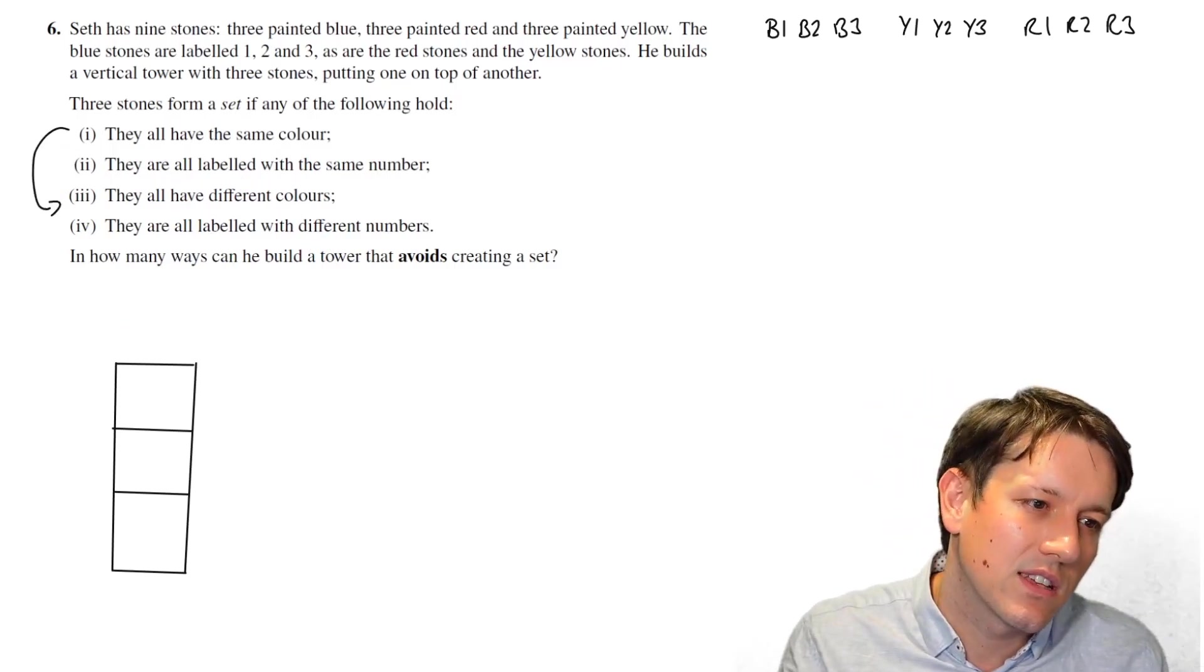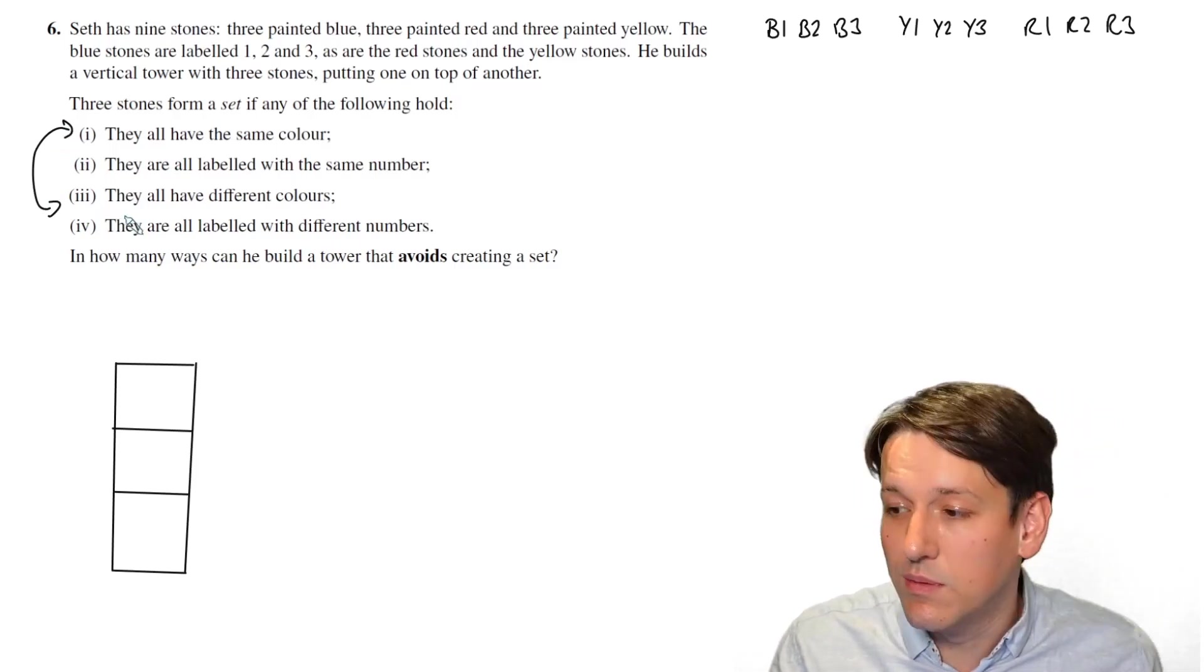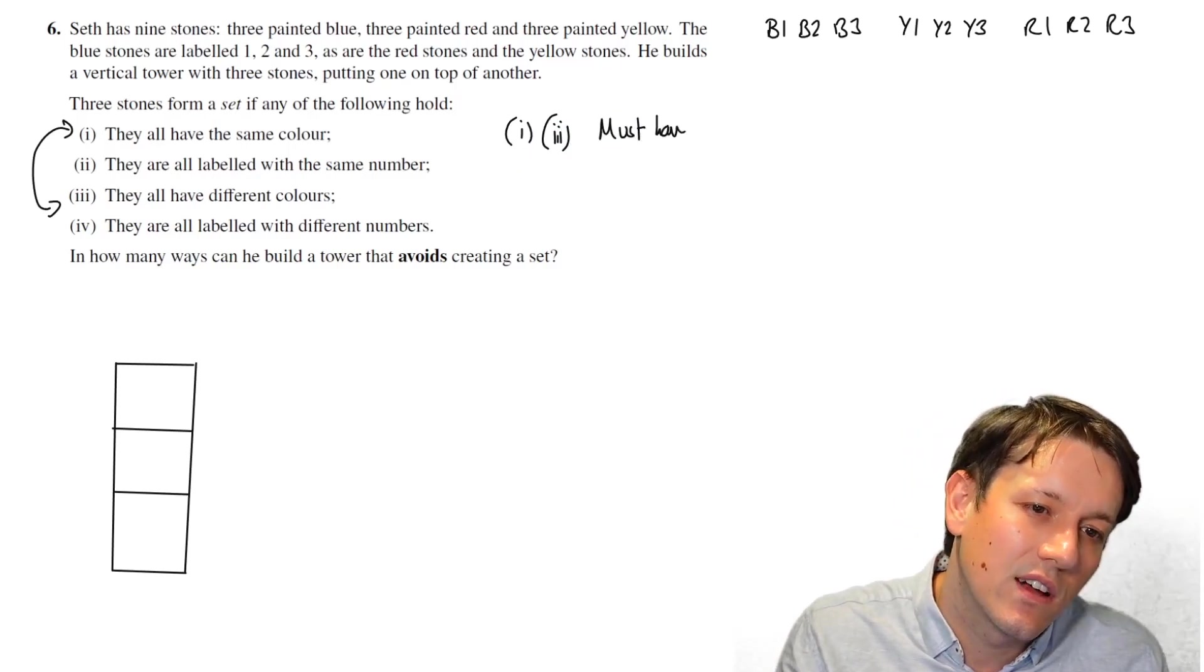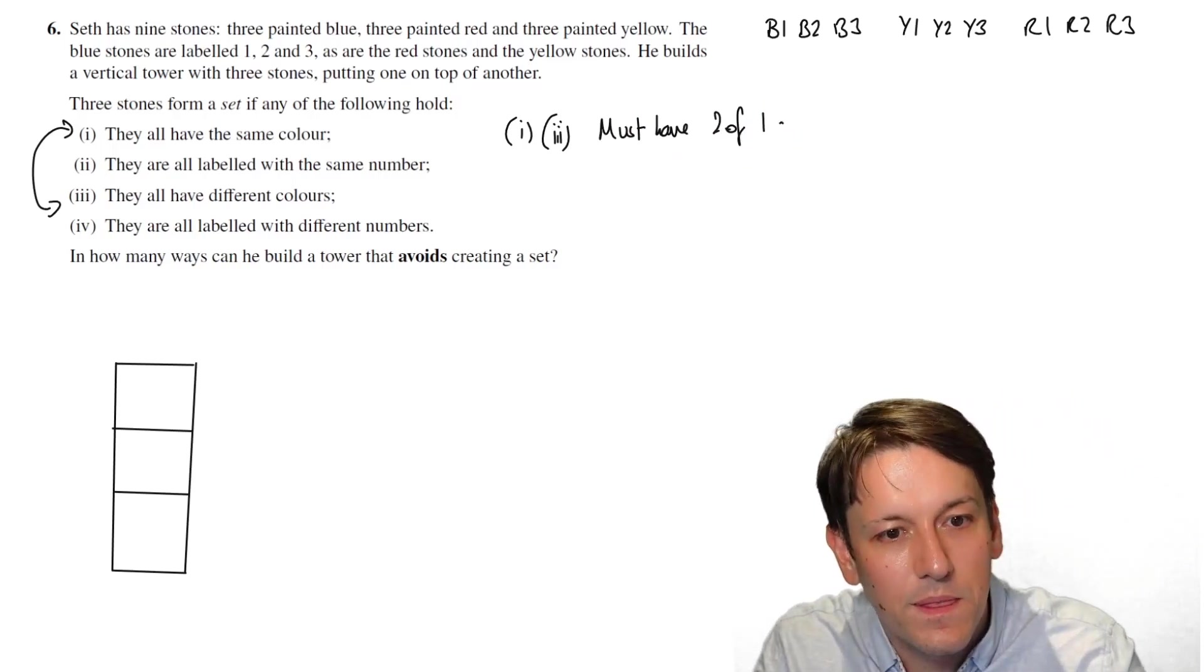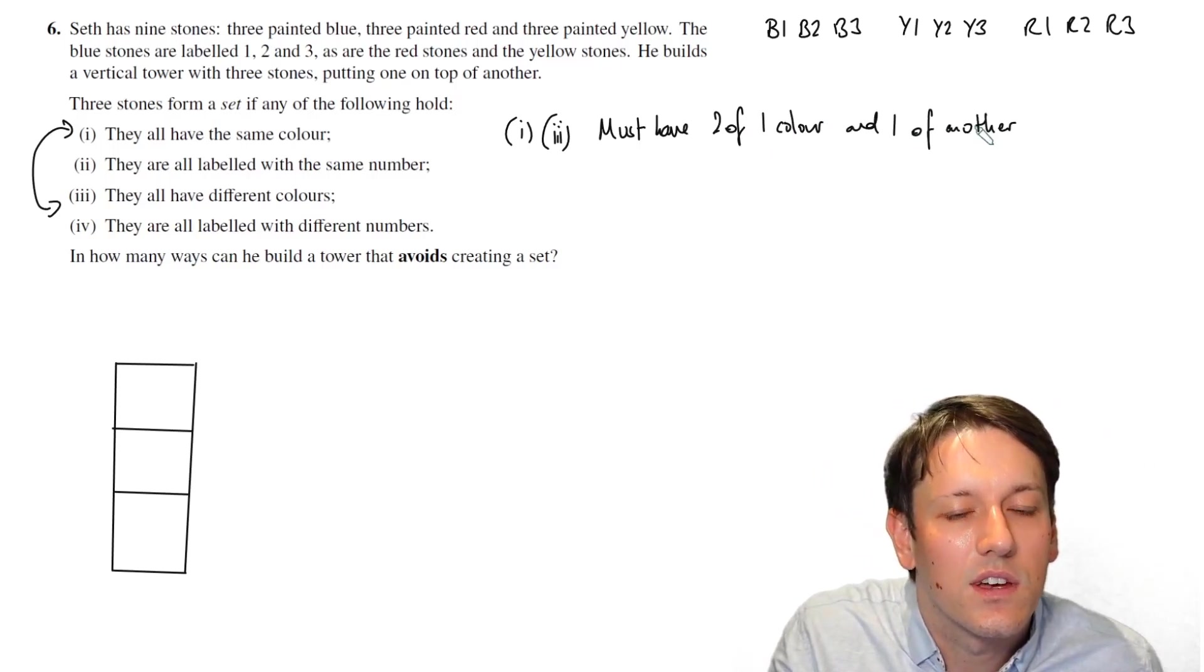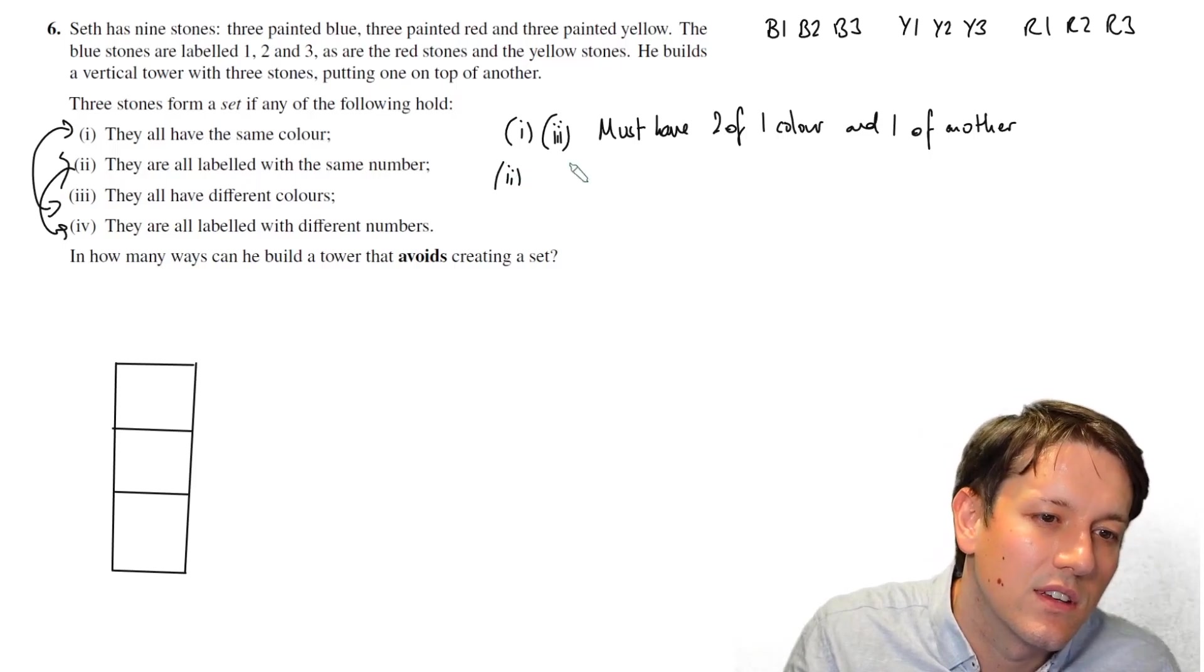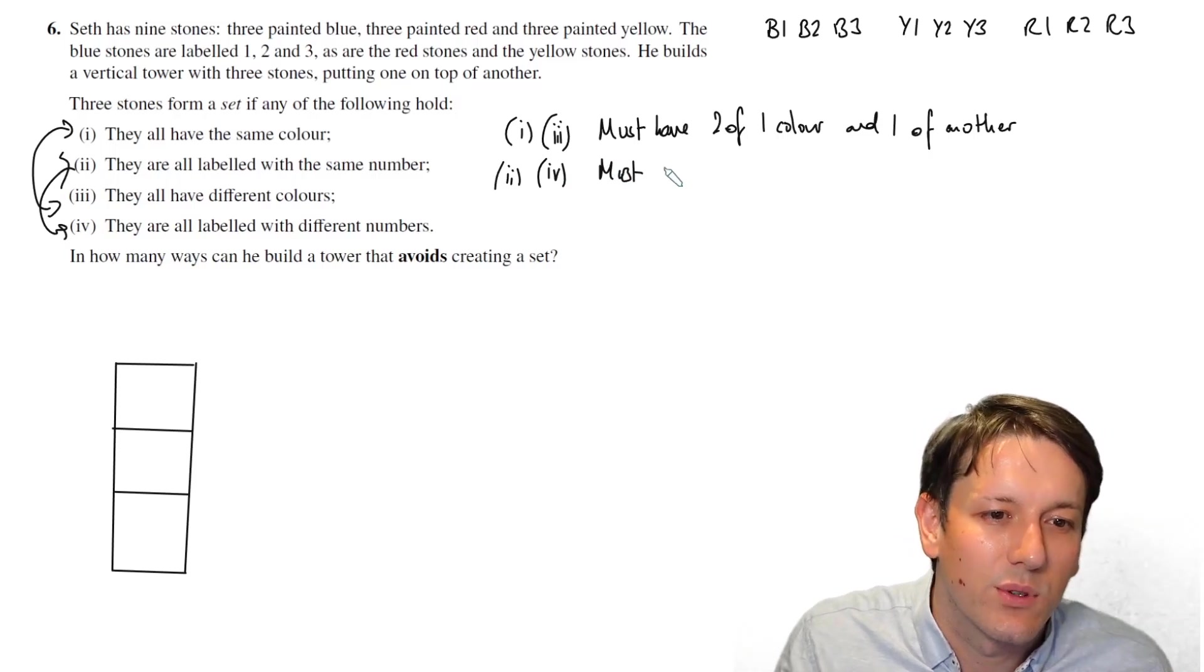Let's think about the colour statements together. We can't have them all the same colour, and we can't have them all different colours. So 1 and 3 actually combine to say that we must have 2 of one colour and 1 of another. Otherwise, I'm going to have 3 of the same colour or they're all going to be different colours. And the same with 2 and 4. There's actually some symmetry in this problem. We can't have all the same number, but we also can't have all different numbers. So we must have 2 of one number and 1 of another.